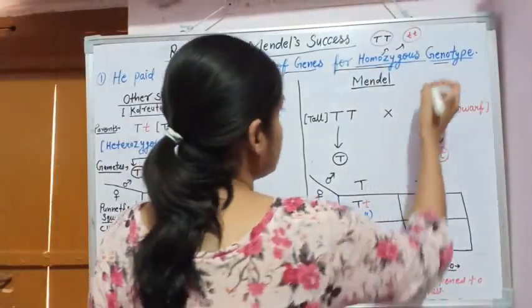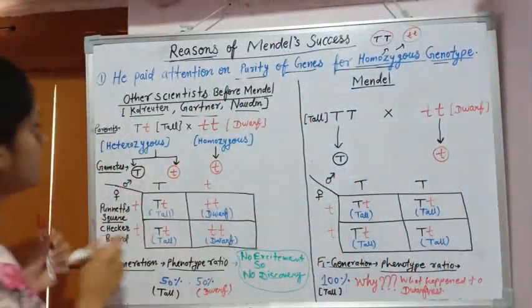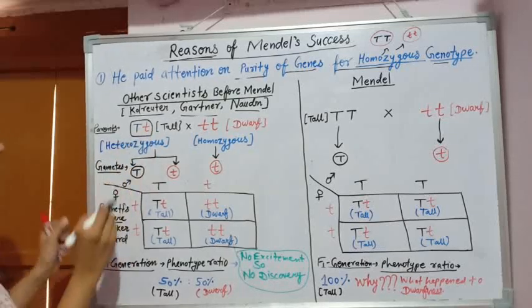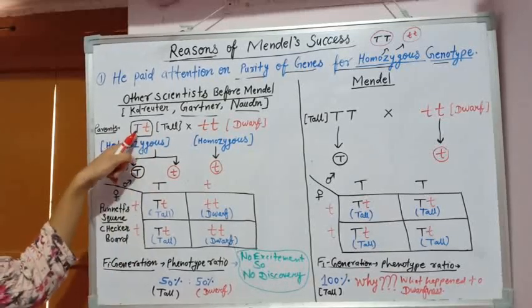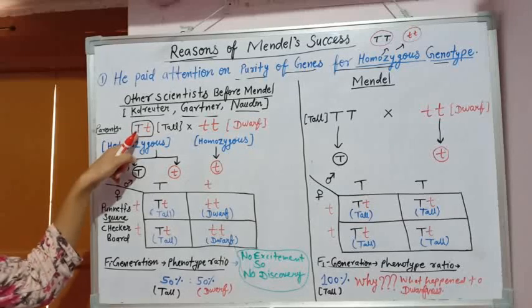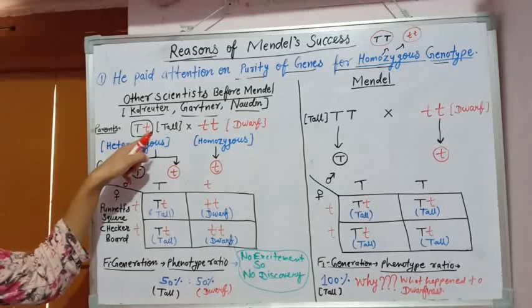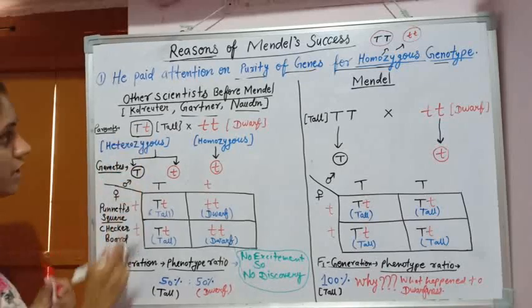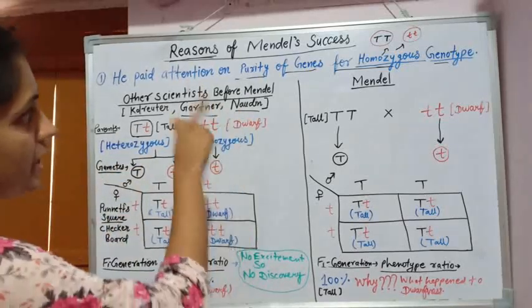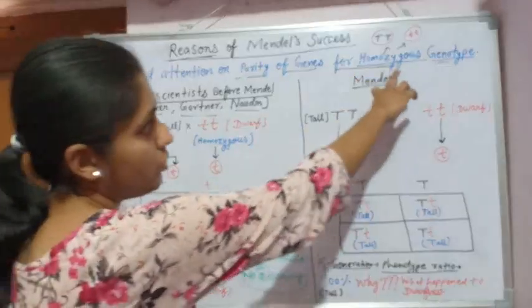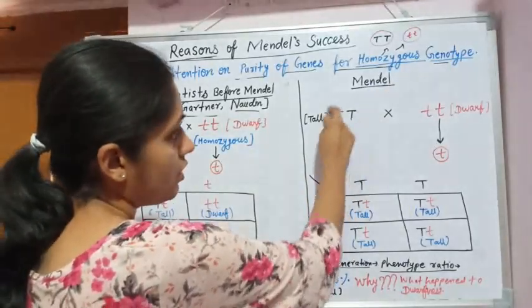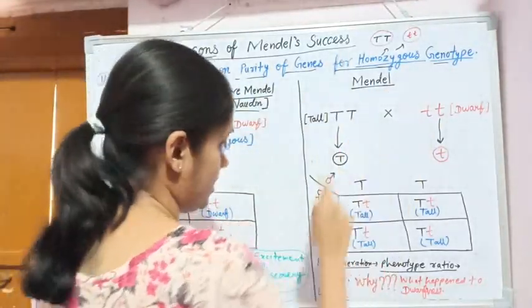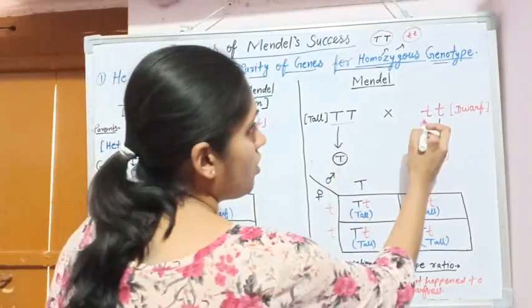What is heterozygous? Heterozygous means — as you can see here — where one allele represents tallness and another represents dwarfness. This condition is known as heterozygous. So Mendel paid attention to the purity of genes by selecting homozygous parents. Both parents he took were homozygous.